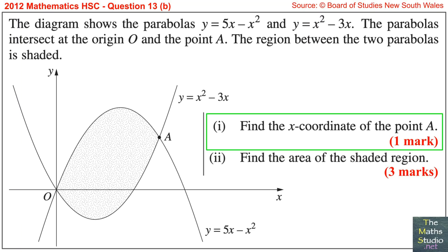Question 13, Part B. The diagram shows the parabolas y equals 5x minus x squared and y equals x squared minus 3x. The parabolas intersect at the origin O and the point A. The region between the two parabolas is shaded. Part 1: Find the x-coordinate of the point A.